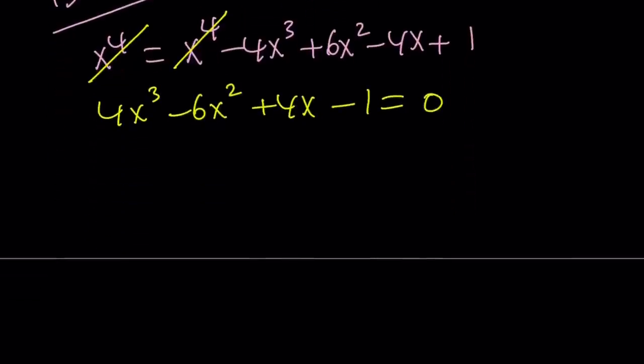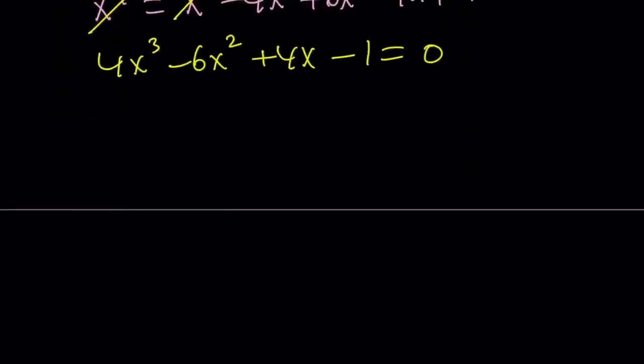4x cubed minus 6x squared plus 4x minus one is equal to zero. Unfortunately, this is not easily factorable, but we can definitely use RRT. What is RRT? Rational root theorem. So if you have a rational root, it should divide or it should be the factors of negative one divided by four. So you're kind of taking the constant, divide by the leading coefficient. So you can go through those choices, but I'll show you a different approach because this is a very special equation.